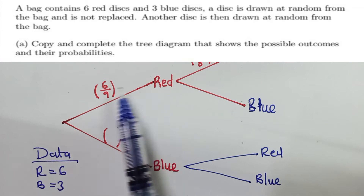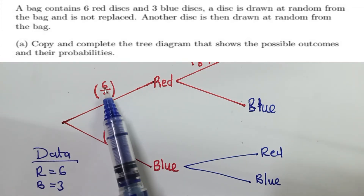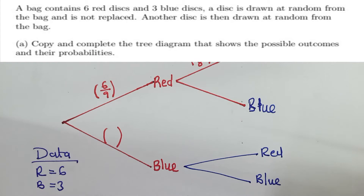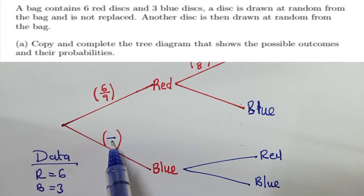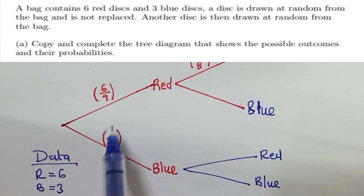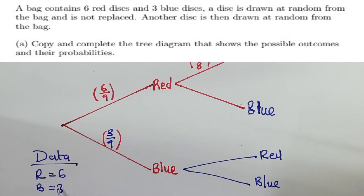Since this is red, on top we'll get 6. Because there were 6 red disks altogether. We shall come here — the denominator will be 9. We are still dealing with the total in the first round. And on top, for blue, it's a 3.